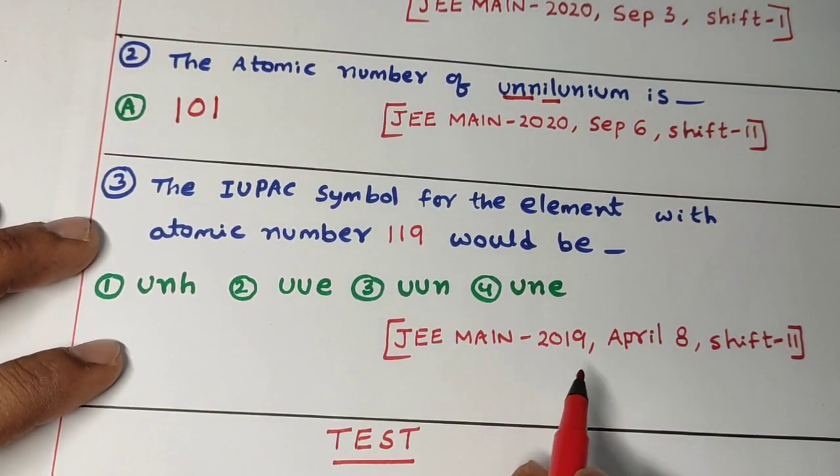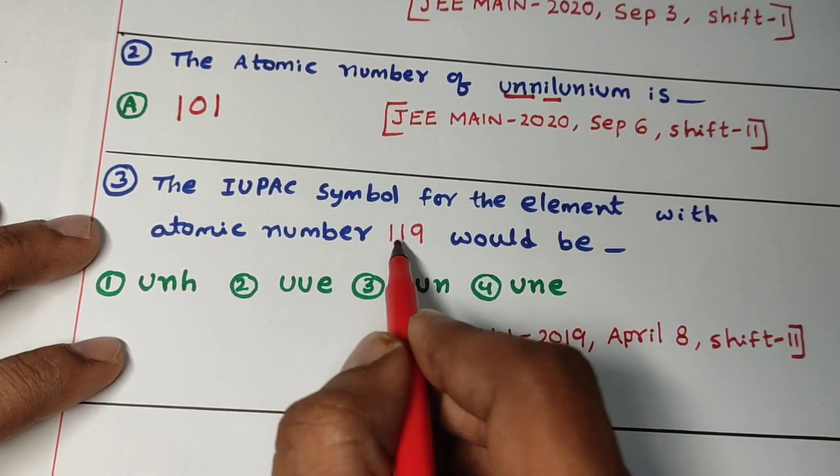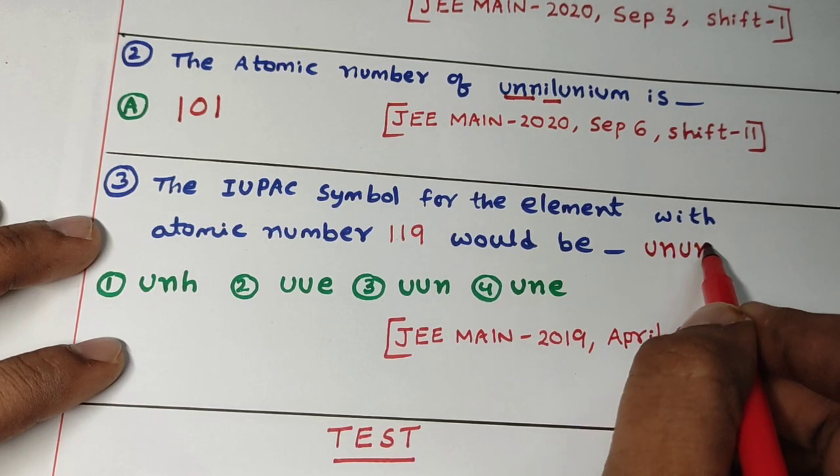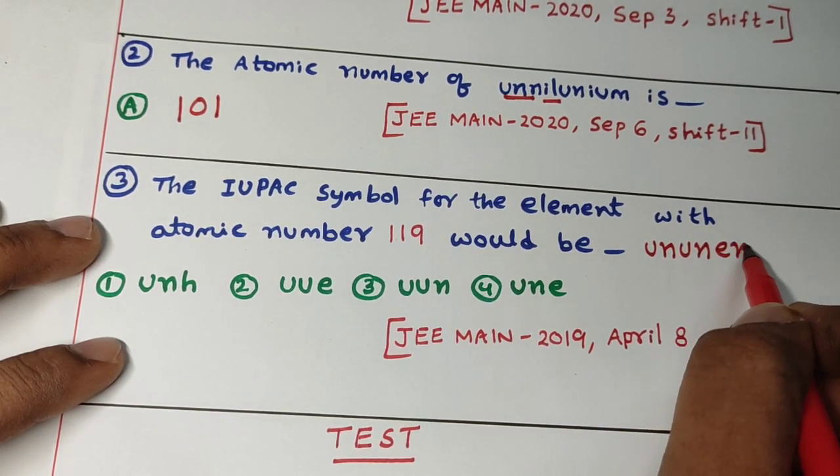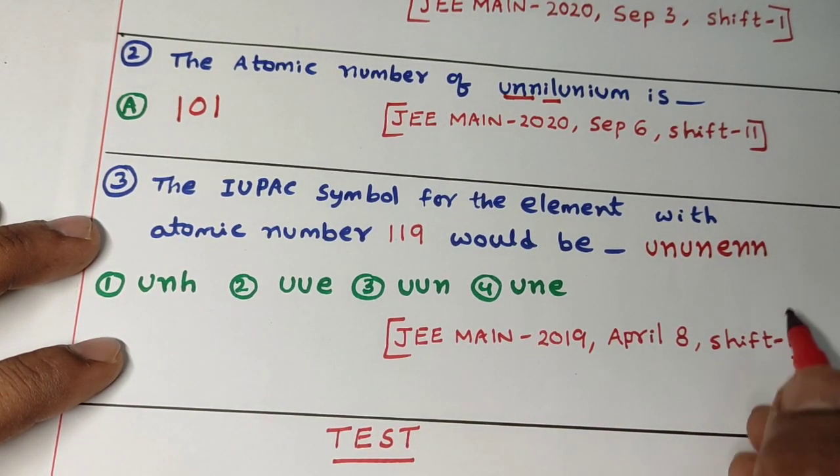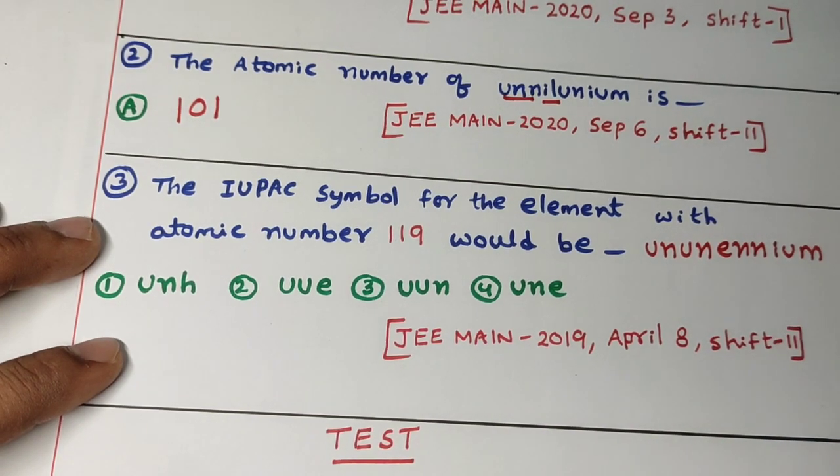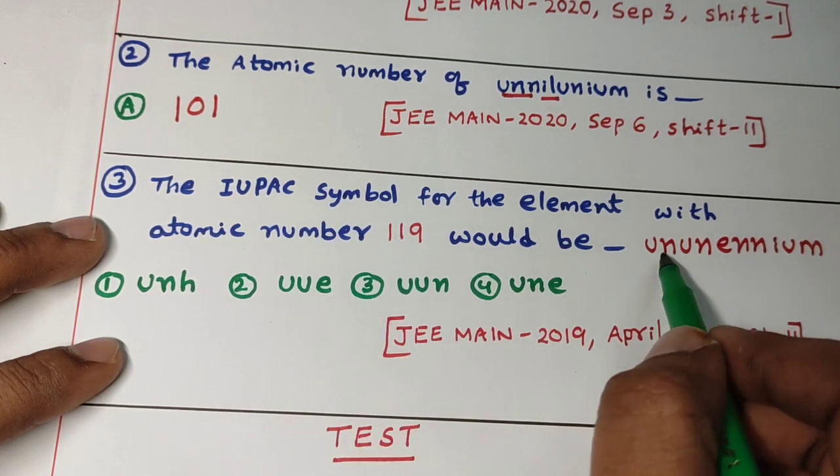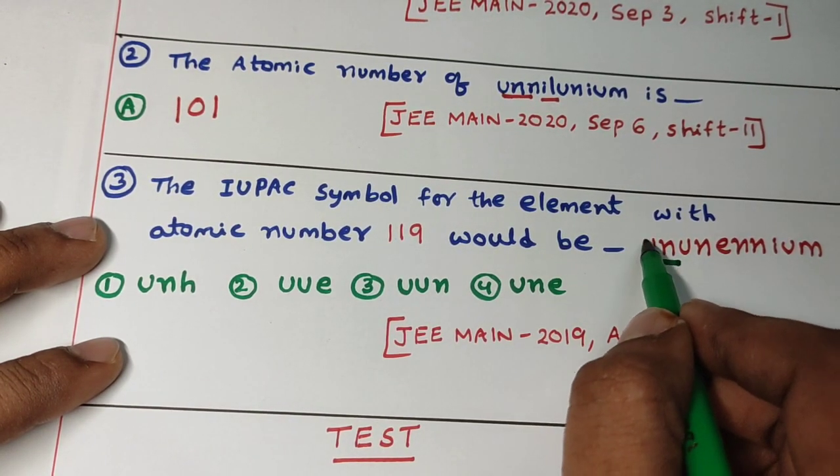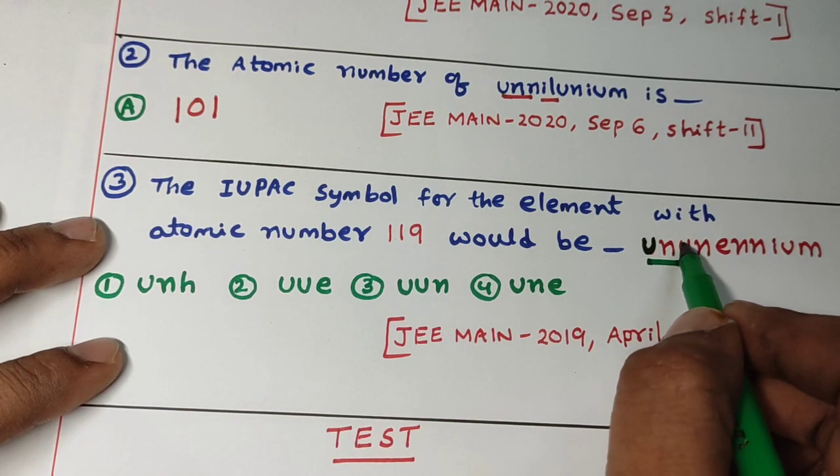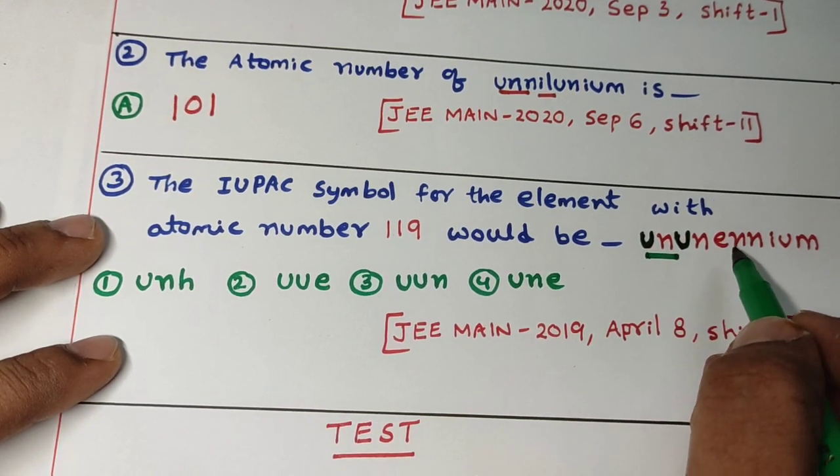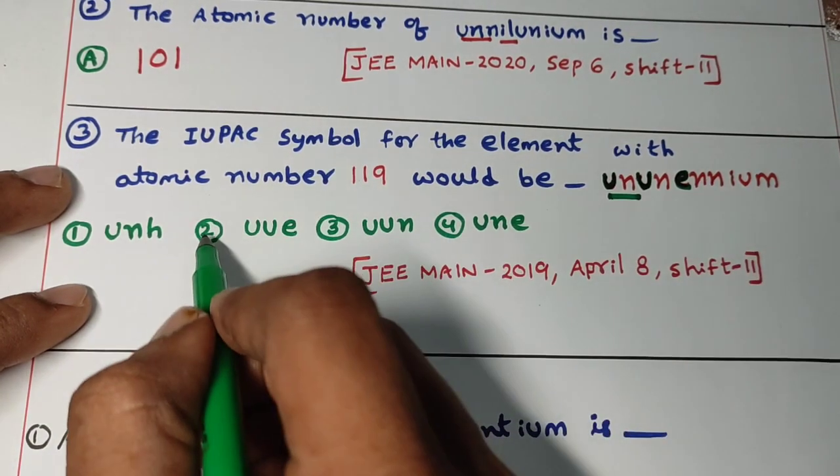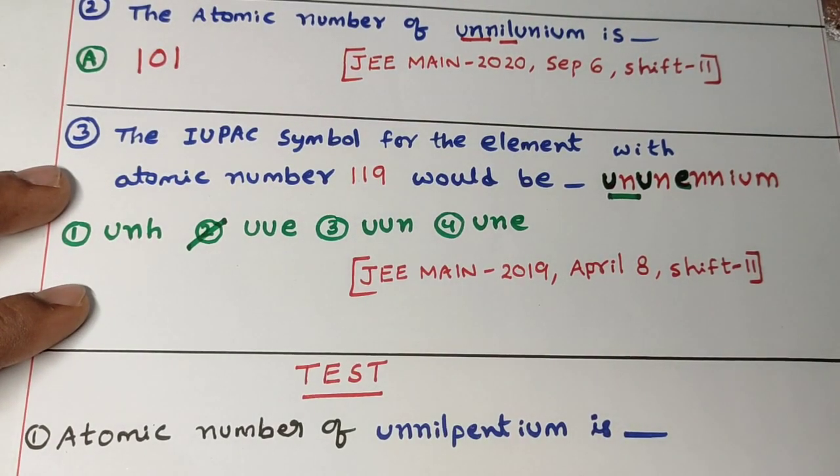Now third question, 2019 question. 119. 1 for un. 1 for un. Again 1 for un. 9 is there, right? Enn we have to take. And finally, what we have to add? IUM. And here, the symbol we have to identify. Un, what is the alphabet? U, right? So U you can take. And again un, U. Next, enn, E you can take. UUE. So what is the answer? 2 is the correct answer.